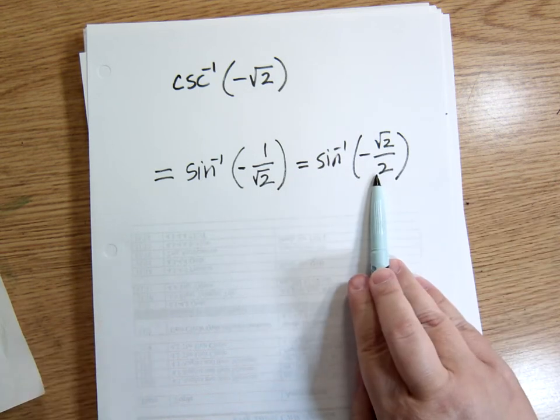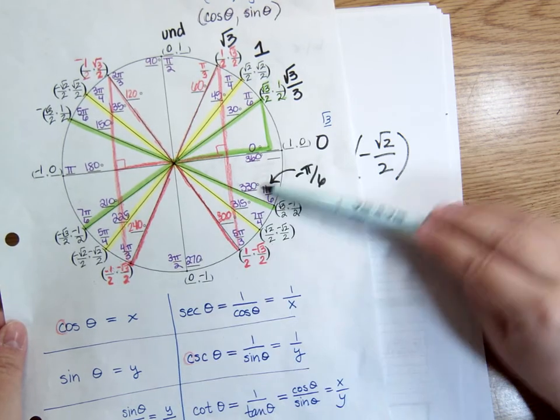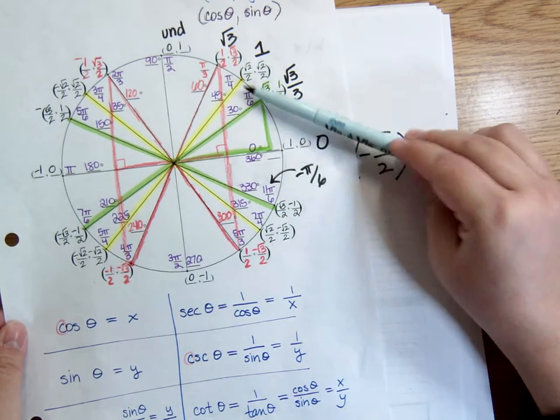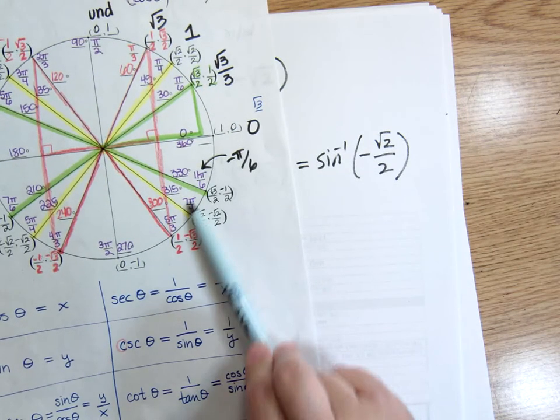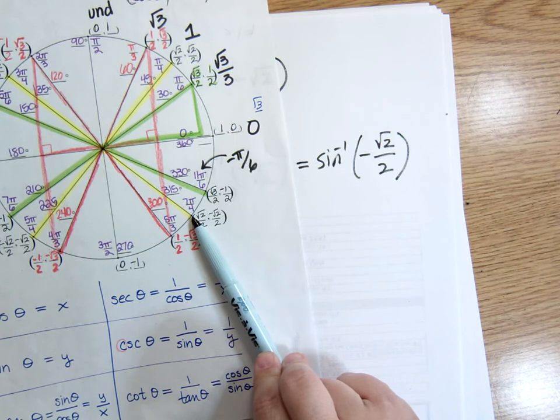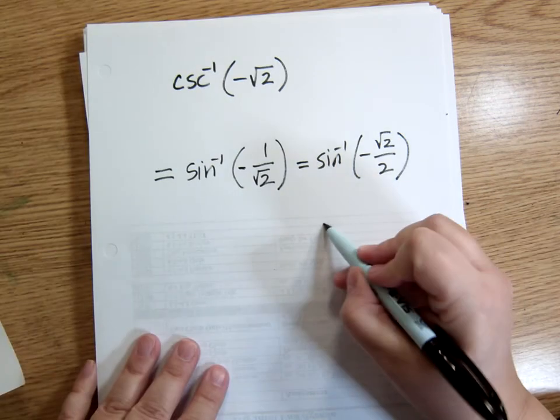So it's negative, so I'm not looking in the first quadrant. When sine is negative, I look in the fourth quadrant, which we think of as negative values of the first quadrant. So I'm looking for where sine is negative square root of 2 over 2, and that happens at negative pi over 4. 7 pi over 4 is the same as negative pi over 4. So that would be my answer.